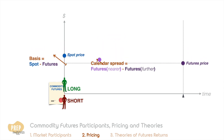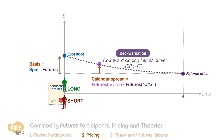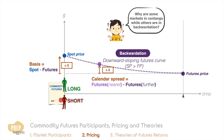Conversely, if futures prices are lower at dates further in the future, the market is said to be in backwardation, and the basis and calendar spreads are positive. This raises the question: what are the factors that explain why some futures markets are in contango while others are in backwardation?